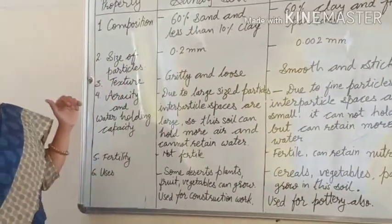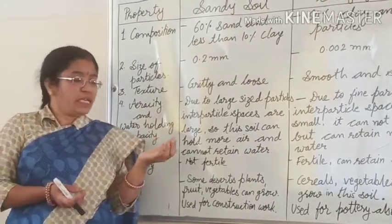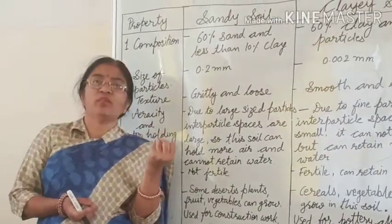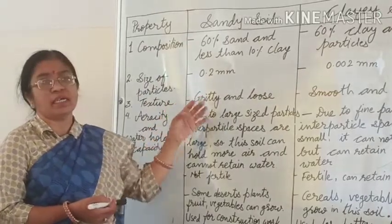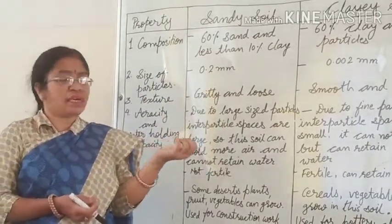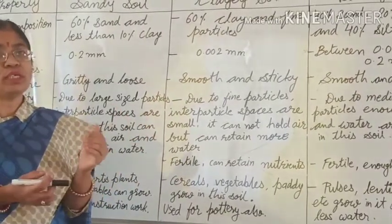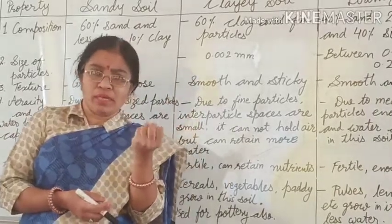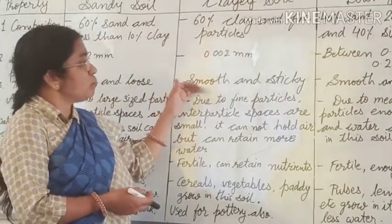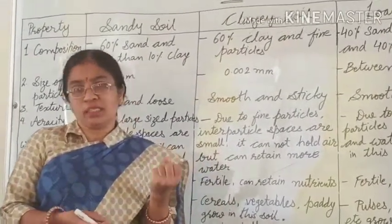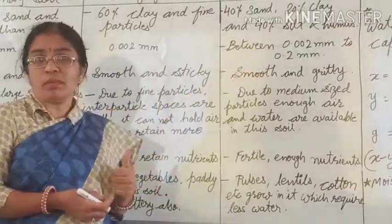Now if we talk about texture — how the particles actually look and feel. If you take sandy soil in your hand and try to feel the texture, you will find the particles are gritty and they slip down, feeling loosely packed. Clay soil particles are very fine and very close to each other, so it feels very smooth like powder, and when water is added it becomes sticky. Loamy soil is both smooth and gritty because it contains both types of particles.